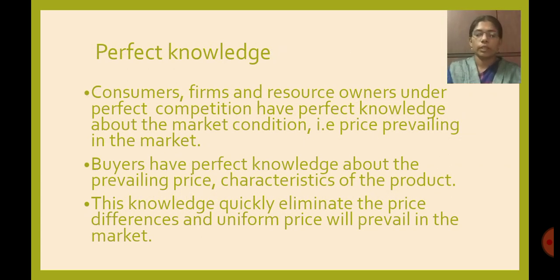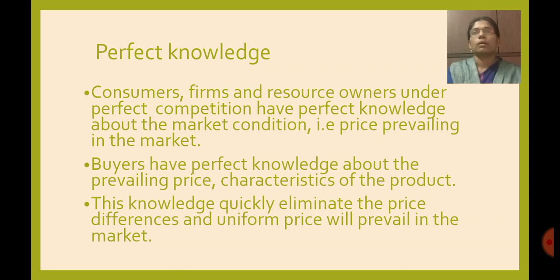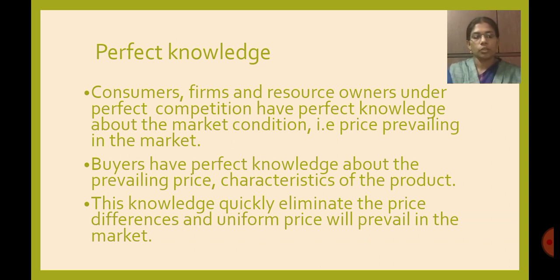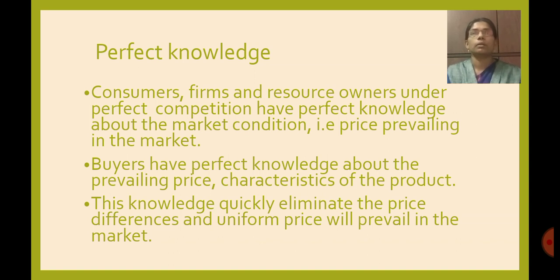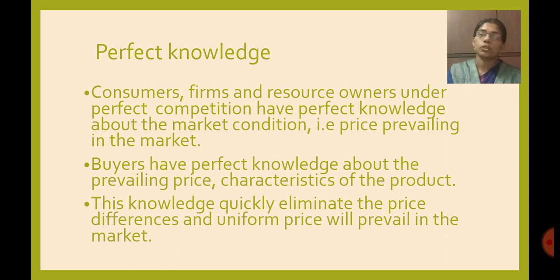The fifth feature is perfect knowledge. Consumers, producers, and resource owners — all three related groups — have perfect knowledge about market conditions and prices prevailing in the market. When all parties have perfect knowledge, there will be a uniform price in the market. No one can increase the price without others knowing, so market price remains equal and price uniformity is ensured. This also implies that all firms have similar cost conditions regarding the production of the particular commodity.